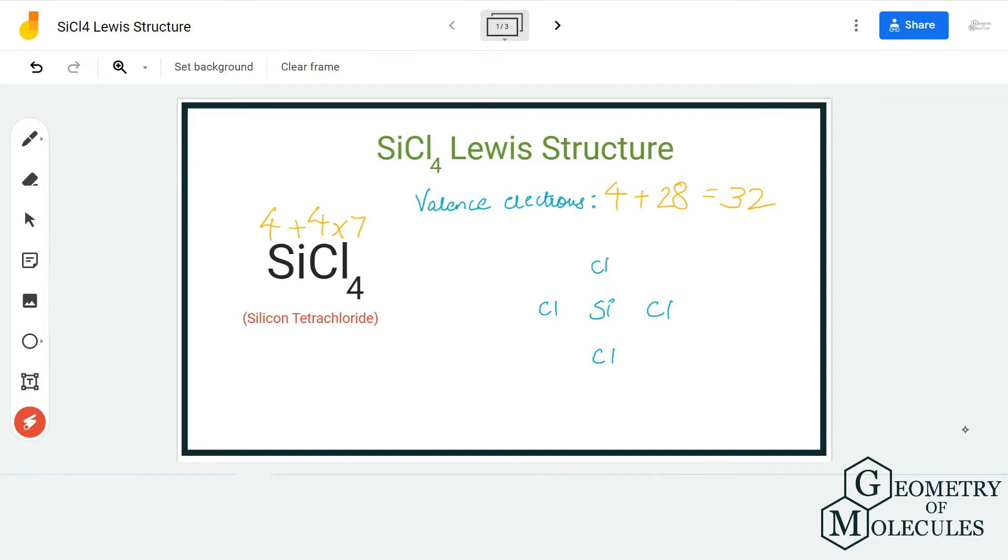So to start with the arrangement, I am going to place the silicon atom in the center and all the chloride atoms will be arranged around this atom like this. To show a bond between each chlorine and silicon atom, I am going to place a pair of electrons.